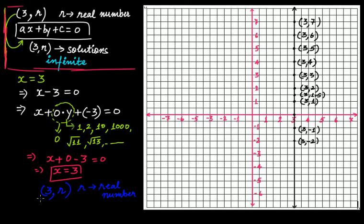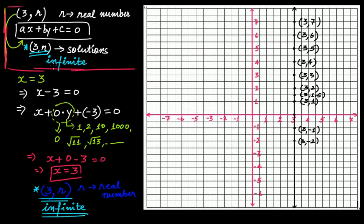So the solutions are infinite: the points (3, r) where r is any real number are solutions of this particular equation. The solutions are infinite. It means that ax + by + c = 0 that we assumed earlier is actually the same equation, that is x − 3 = 0.